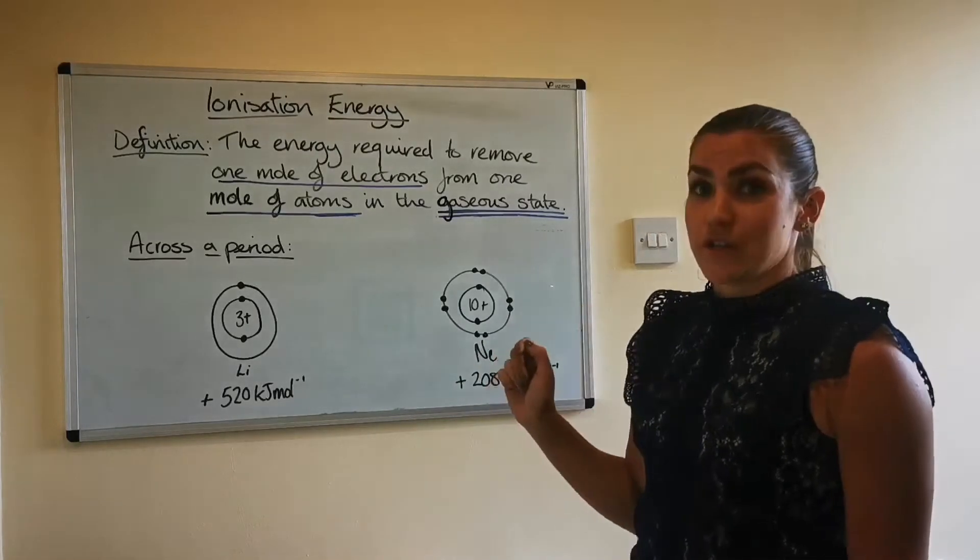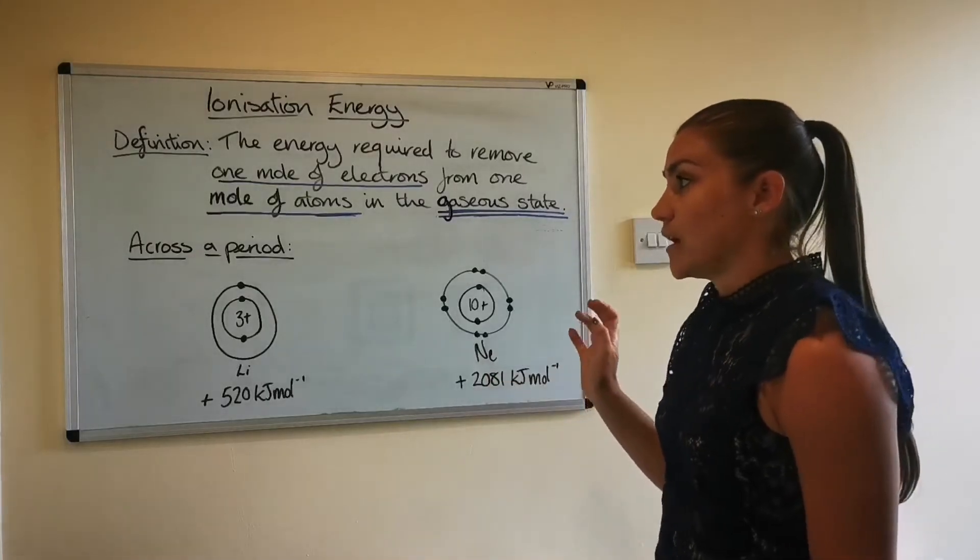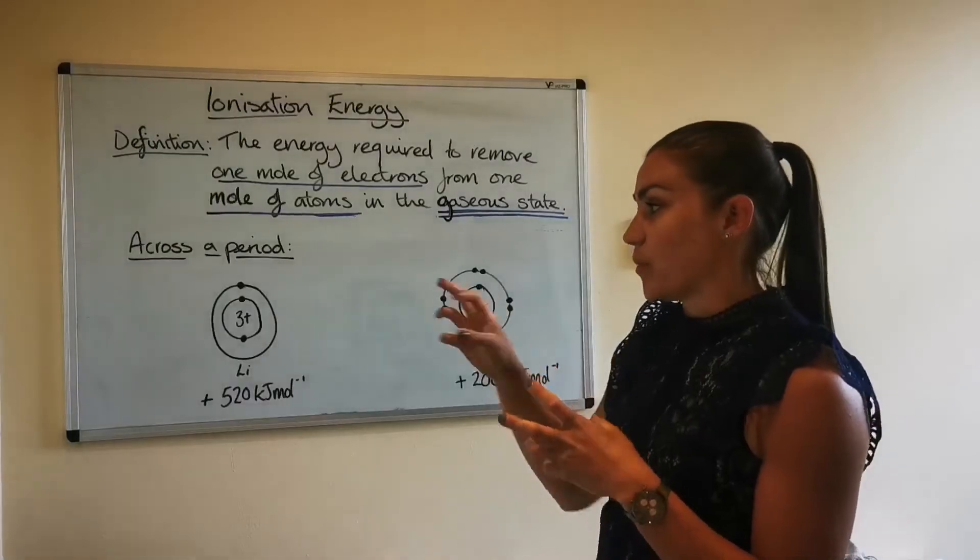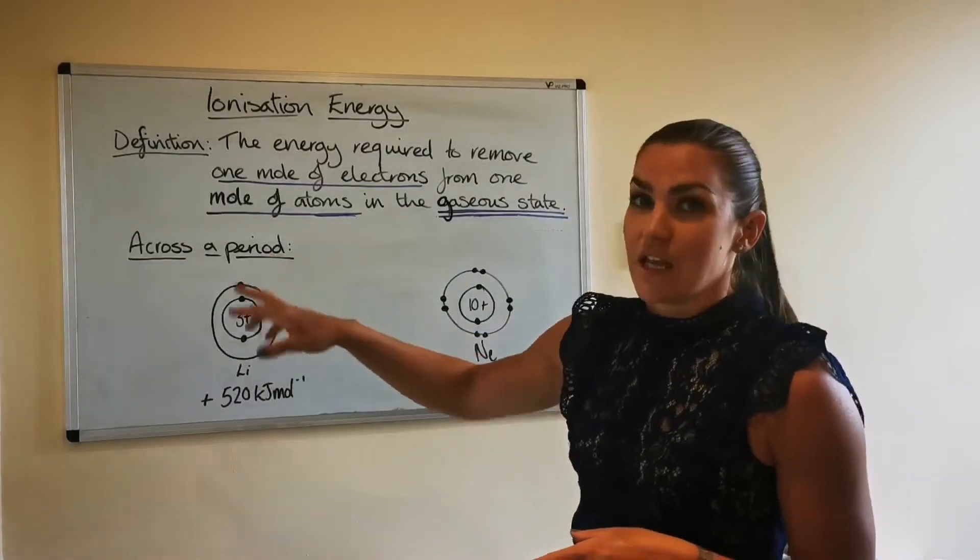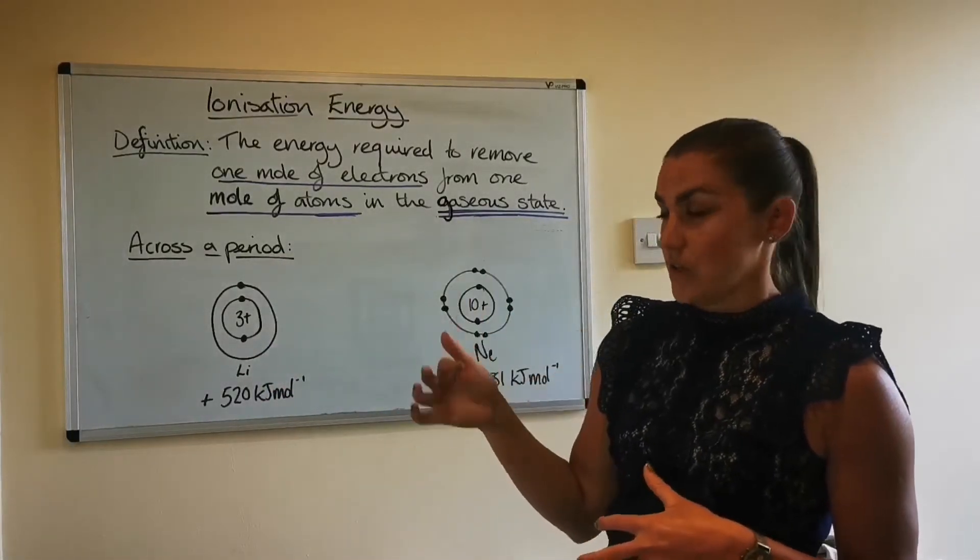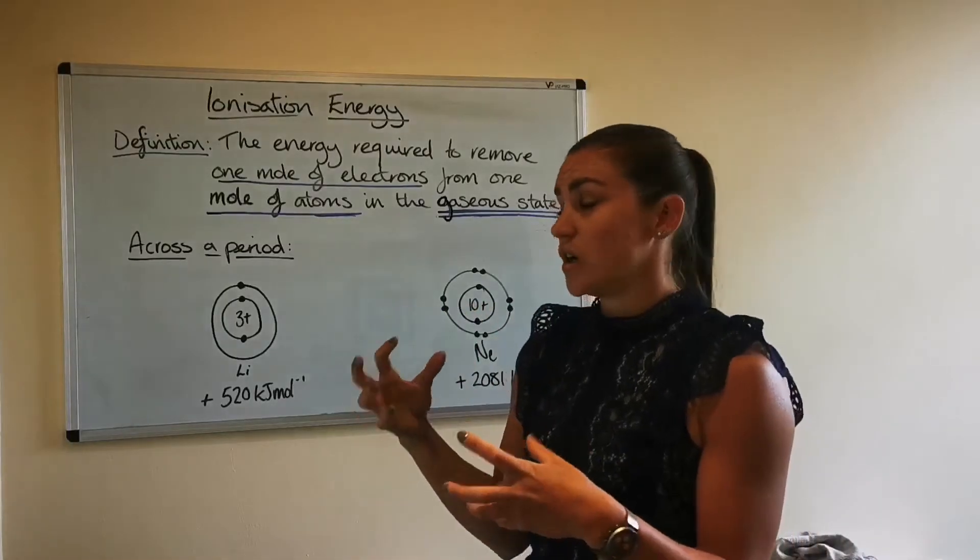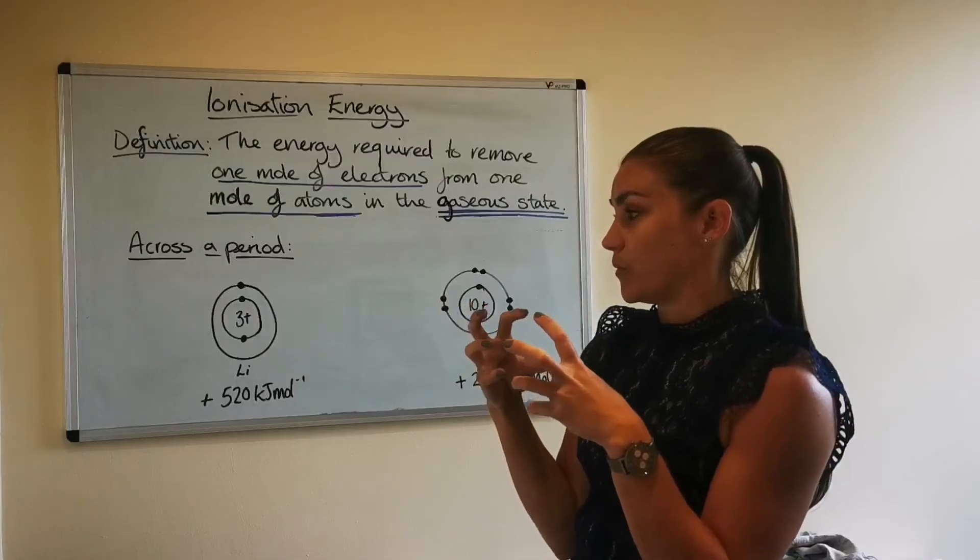So what we're going to do now is explain that. So in previous videos I've said to try and imagine atoms as magnets. So you've got a positive charge in the middle and then the negative charge is circling around the outside. So the opposite charges are attracted to each other.